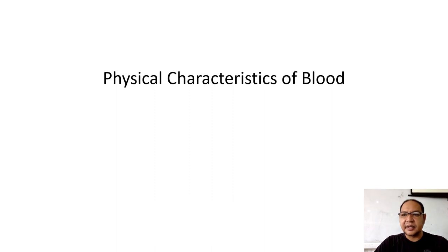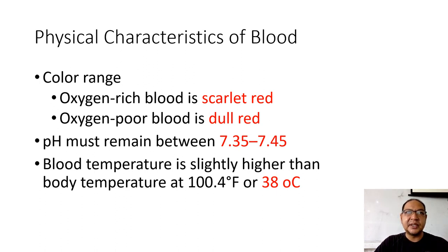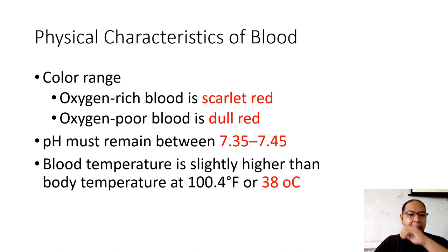Now the physical characteristics of blood. Regarding color: oxygen-rich blood is scarlet red or bright red. In the arteries, which mostly carry oxygenated blood, the blood coming out is scarlet red or bright red. Oxygen-poor blood is described as dull red or maroon. So if oxygen is poor in the blood, the blood becomes dull red.